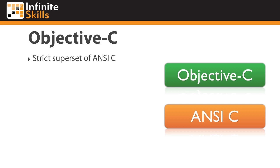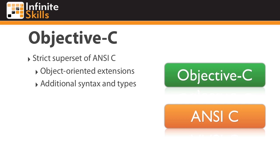Objective-C is built entirely on top of standard ANSI-C. As such, it's considered a strict superset of C. This means that any valid C code is also valid Objective-C code, and you're free to mix and match these as necessary, and in fact often do. But of course Objective-C is an object-oriented language, whereas ANSI-C is not. So there are a number of extensions that were added to support object orientation, as well as additional syntax and types, to support the full suite of features you'd expect from an object-oriented language.